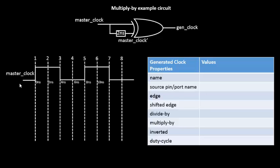Let's first build the waveform. The master clock has a rise at 0 nanoseconds, a fall at 4 nanoseconds, and the next rise at 8 nanoseconds. So the master clock has a period of 8 nanoseconds — that is one full clock cycle. When we say multiply-by, it means the generated clock should have a faster frequency. Essentially, whatever waveform you see for the master clock, you'll see a smaller, faster waveform at the output. Let's try to derive it.